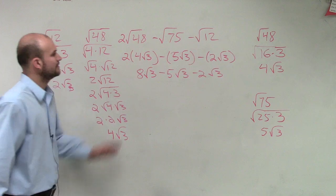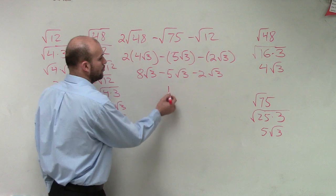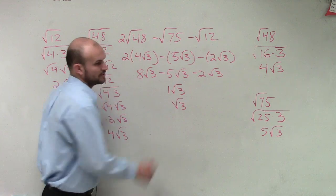So, I have 8 square root of 3 minus 5 square root of 3 minus 2 square root of 3, which is just going to equal 1 square root of 3, which equals the square root of 3.